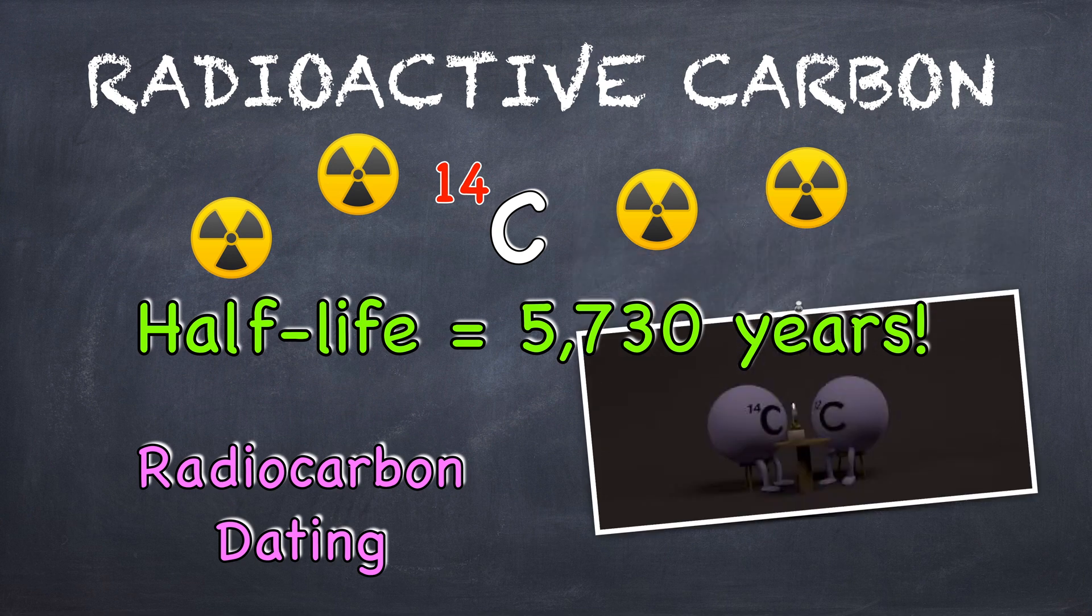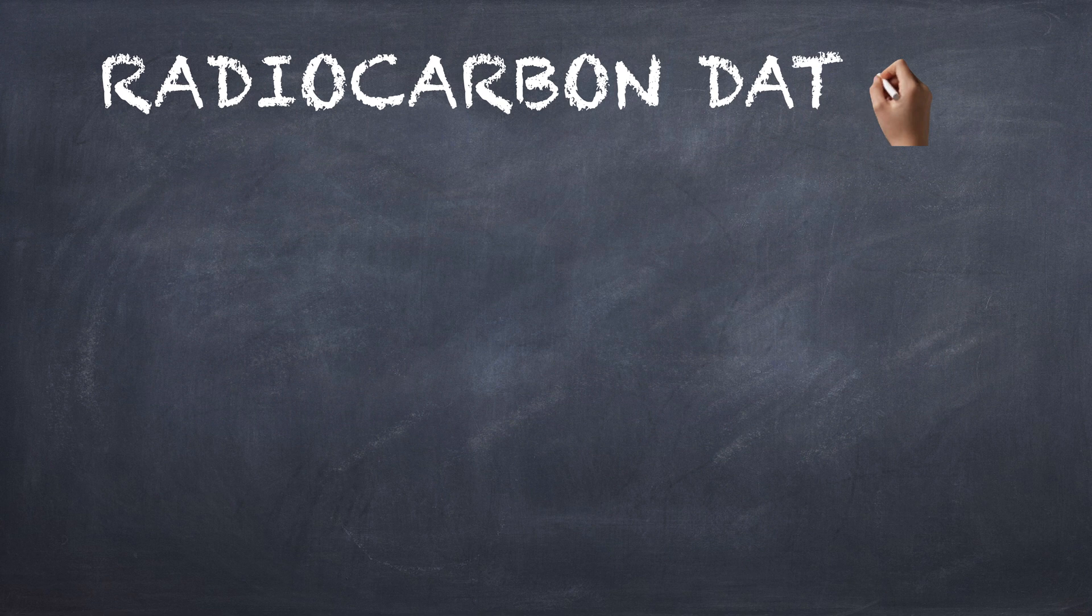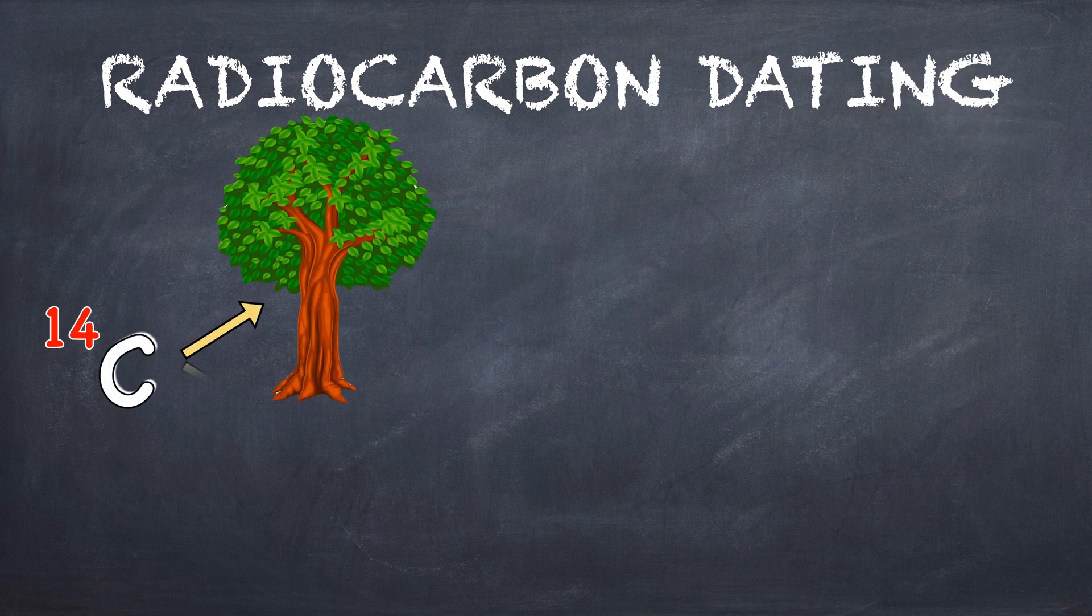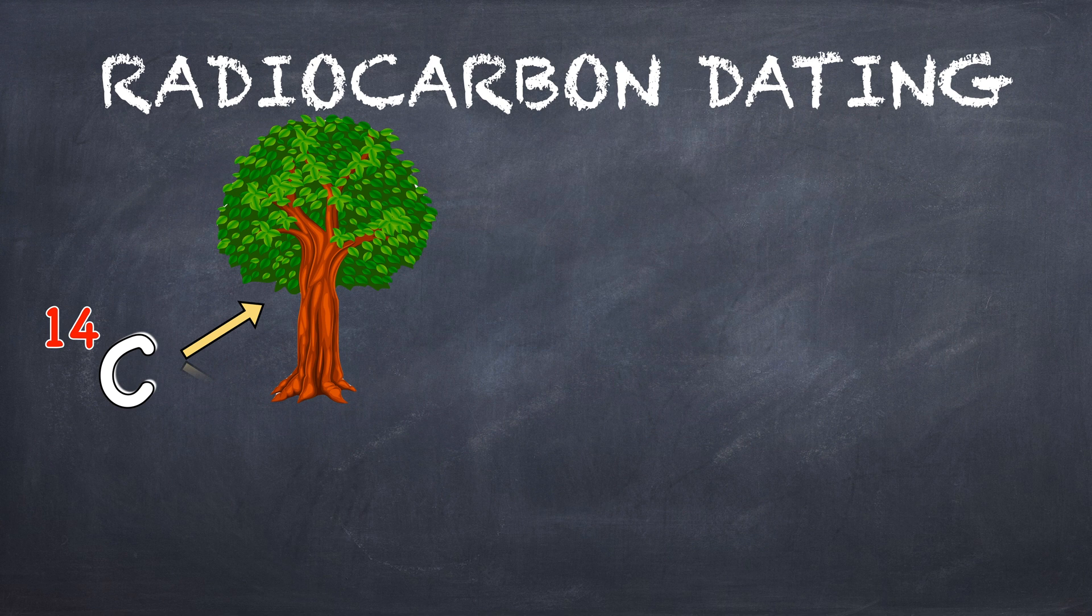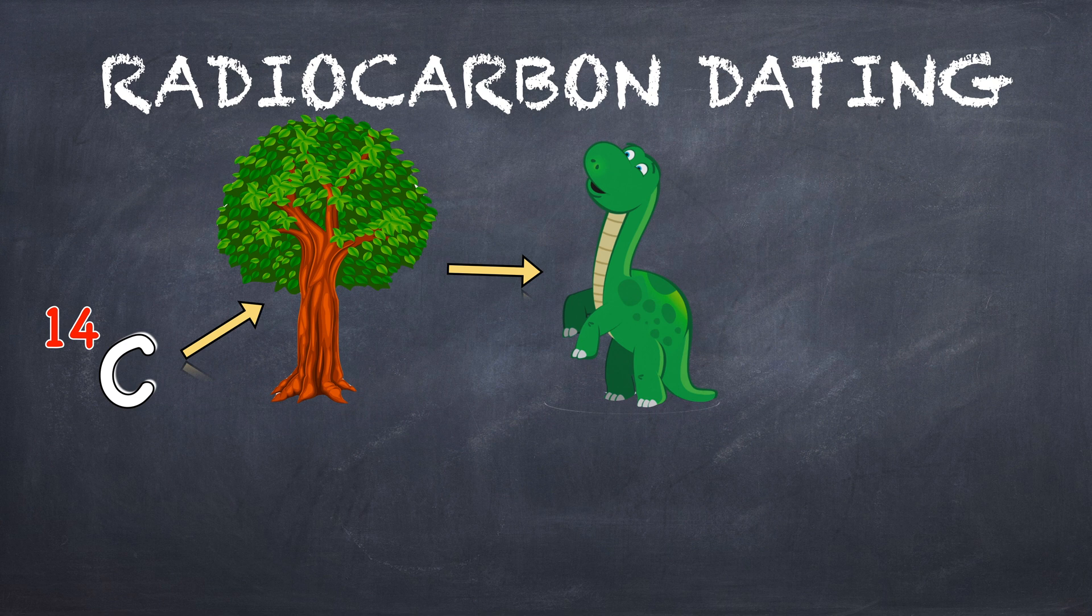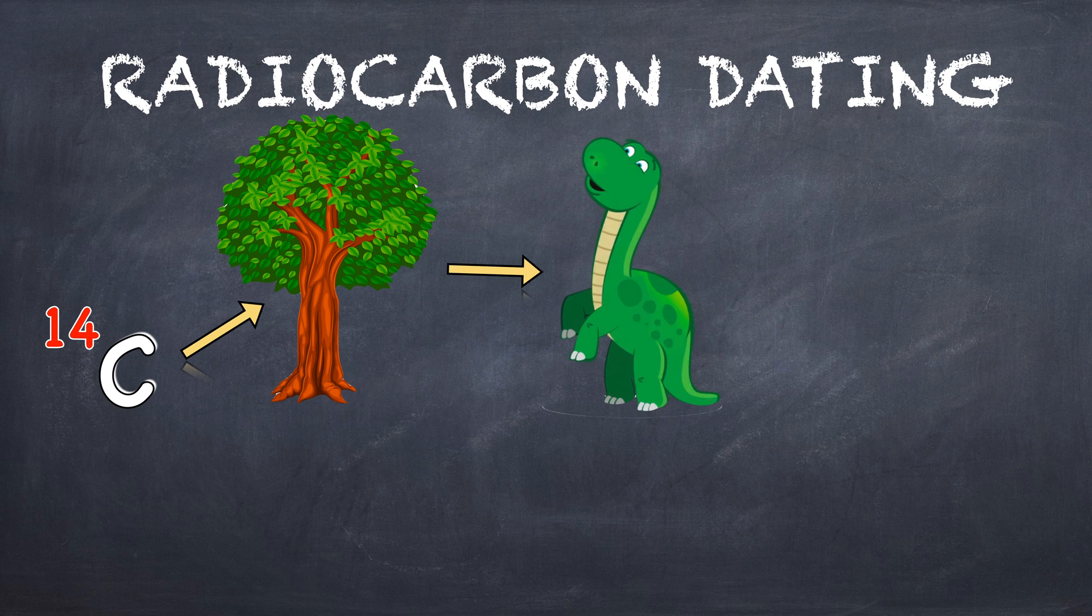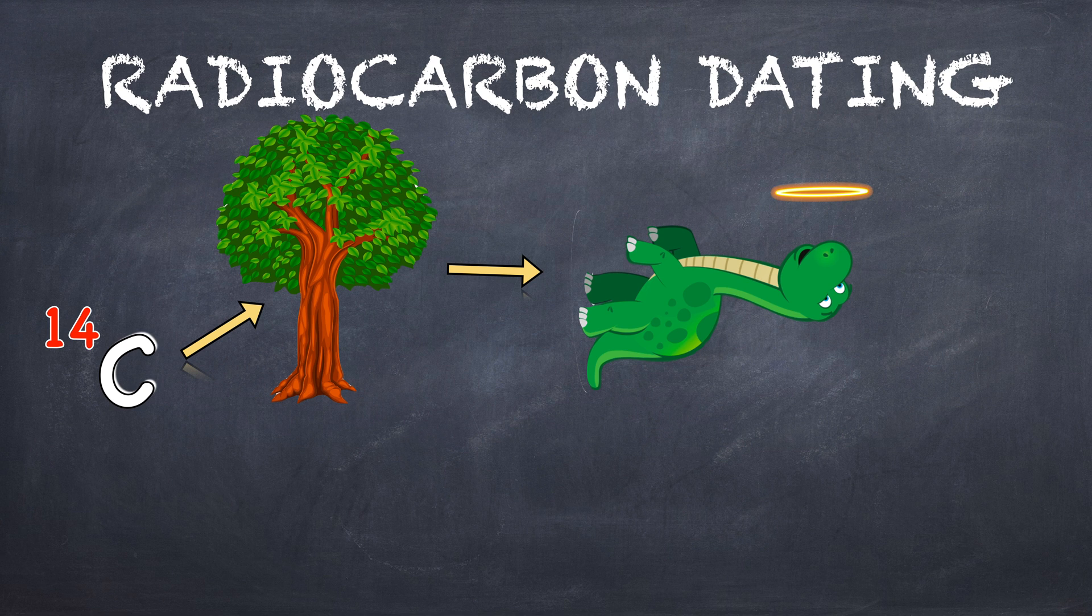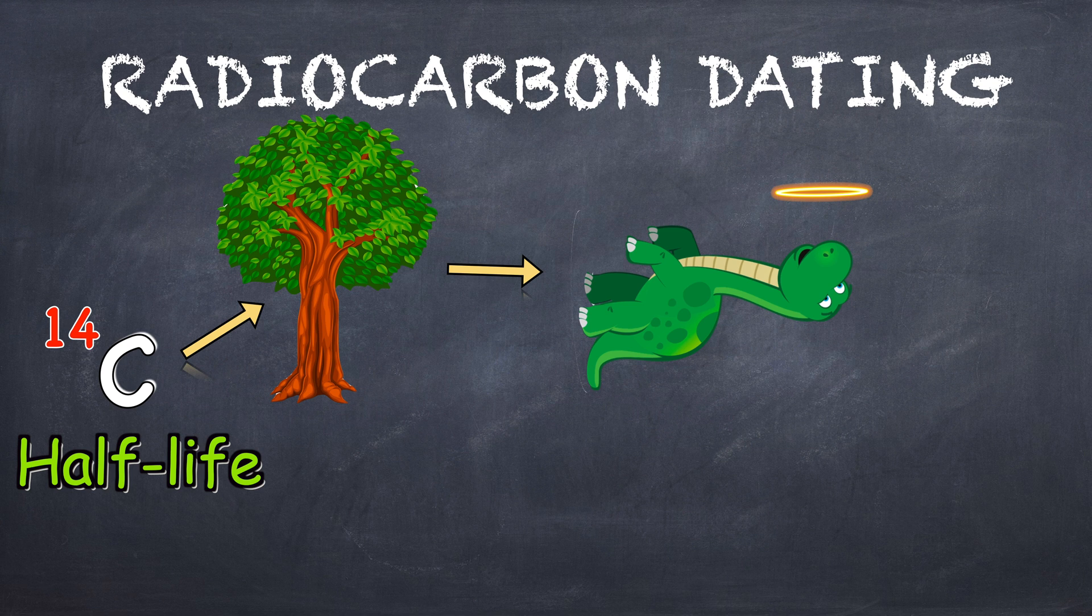Let's look at the radiocarbon dating process. Plants take up radioactive carbon dioxide in respiration. Animals incorporate carbon-14 into their bodies by eating plants or other plant-eating animals. After the animals die, they stop taking in carbon-14. Scientists can now use carbon-14's half-life to measure how long it has been since the animal died.